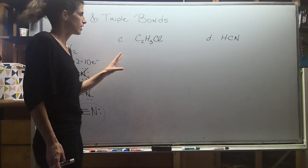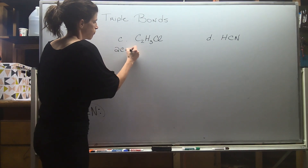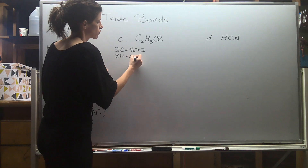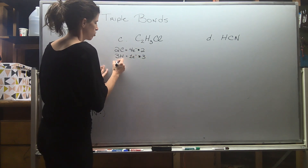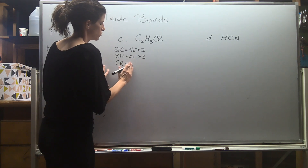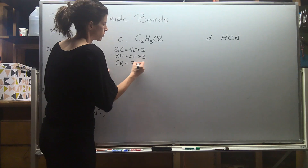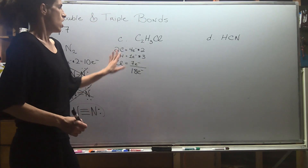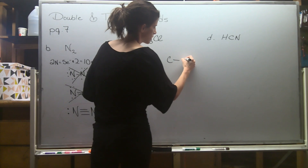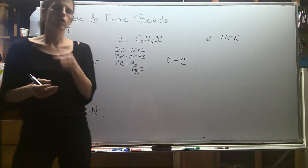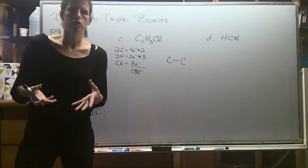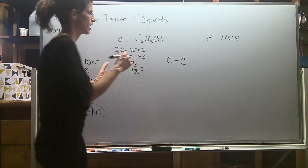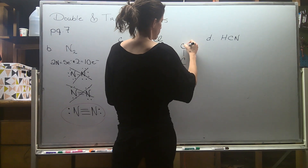We're going to start with the electron math for the next molecule. I have two carbons — four electrons times two — three hydrogens in group one — one electron times three — and chlorine is in group seven, just one of them, so chlorine donates seven electrons. This gives us a total of 18 electrons. I'll start the structure with the carbons in the middle. Chlorine and other group seven atoms are pretty electronegative, so typically you want to put them in terminal or outside positions.